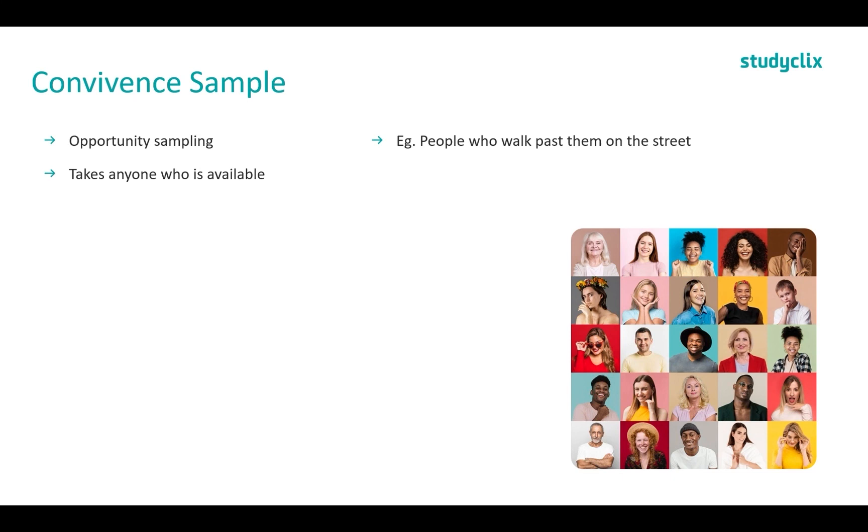Now this will produce a biased sample which means that everyone in the population does not have an equal chance. So back to our street experiment, not everyone has an equal chance because we are just taking whoever is there on the day.